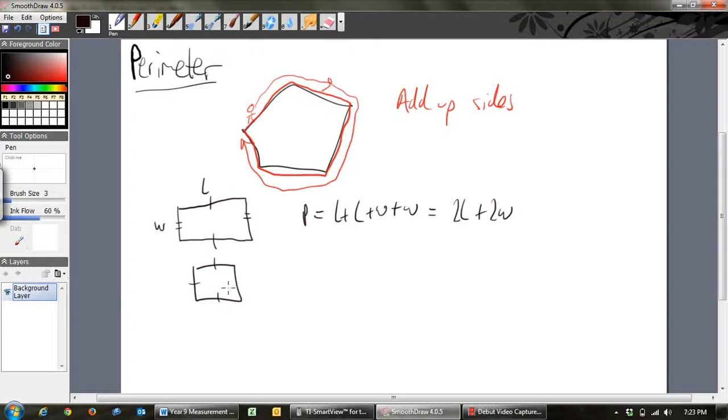For a square then, if you've got all the sides equal and you have the length there, the perimeter of this is just L plus L plus L plus L. Because they're all the same, 4 together, and that's just 4 times L. There's your rectangle, there's your square.